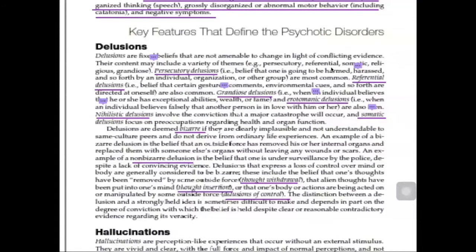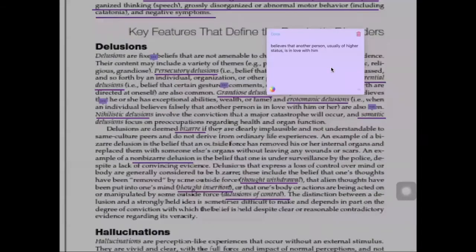Another type, which is rare compared to the former ones, is erotomanic delusions — when a patient falsely believes that another person is in love with him or her. That kind of delusion is called erotomanic delusion.